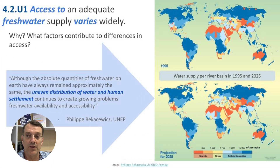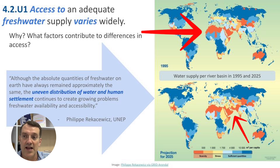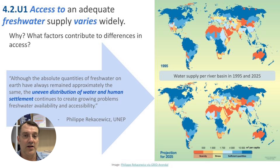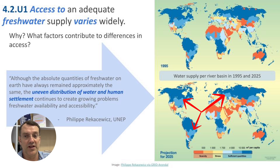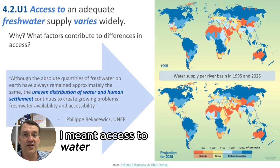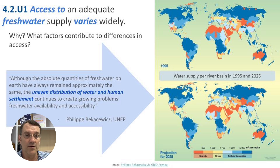When we look at these maps we can see that areas typically classified as desert biomes have less water availability, while areas in more temperate climates with more precipitation have better access to water. But that's not always the case — there are plenty of examples of people who have access to water but may not have adequate access to fresh water.